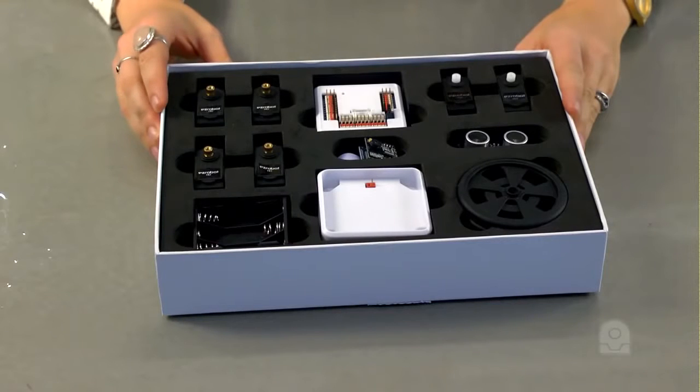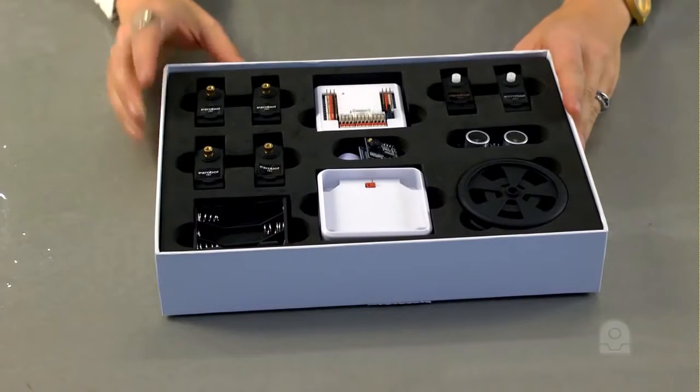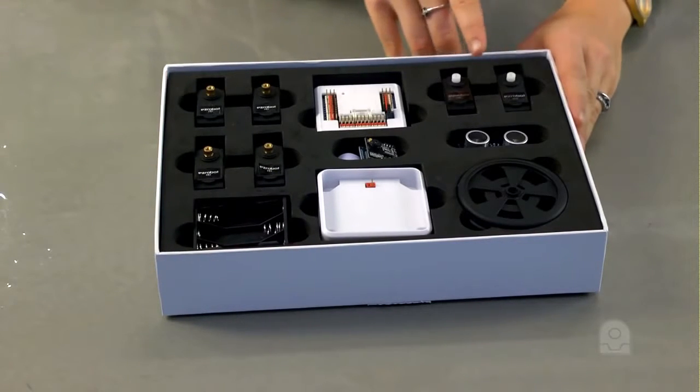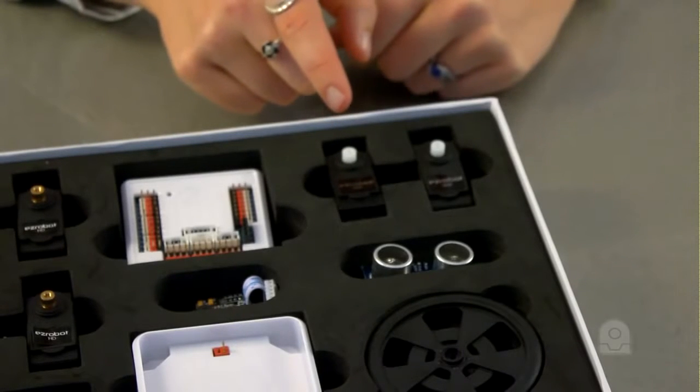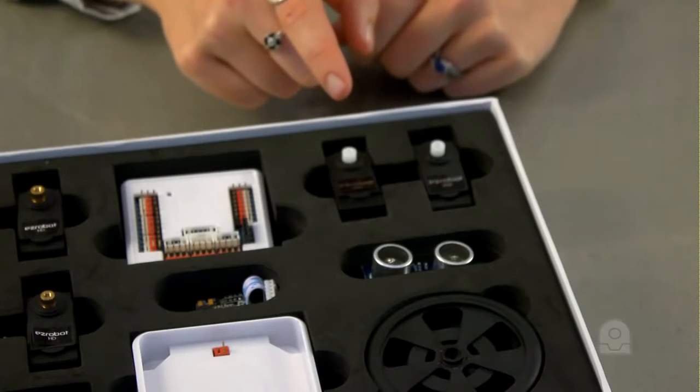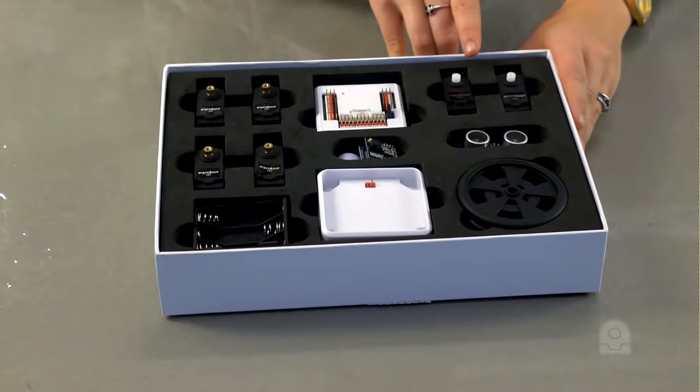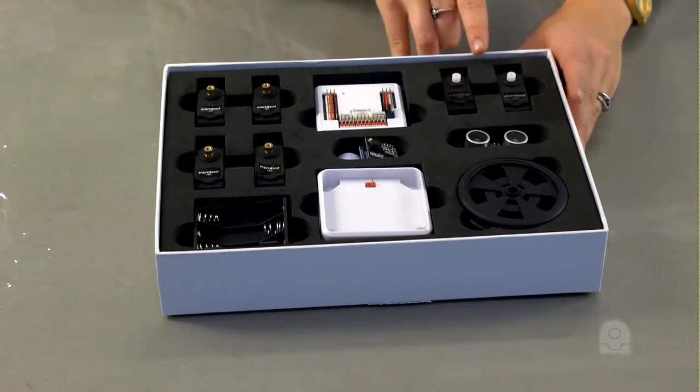These are the EZRobot 360-degree servos, also referred to as modified or continuous rotation servos. These servos spin 360 degrees in both directions like a motor. These servos are actually really fast.